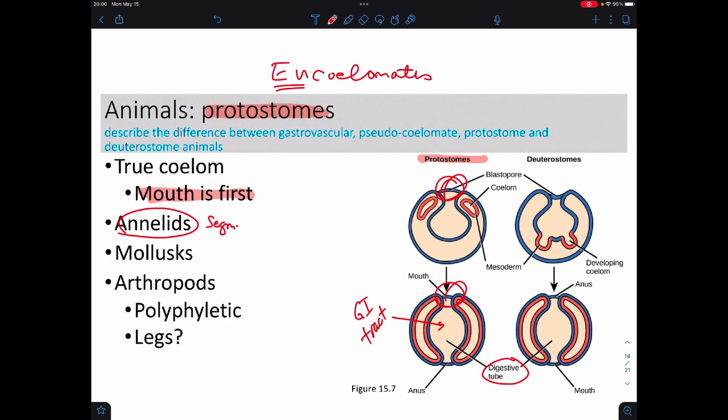So, those are things like annelids, so these are segmented worms. Think of earthworms and leeches. Molluscs are things that happen to have mantles, and they have shells, so think of squid, and octopus, and snails, things like that.